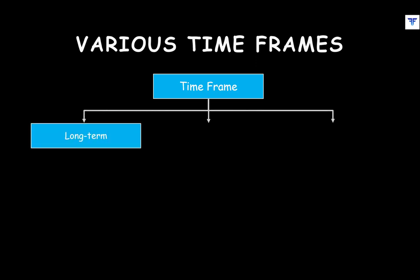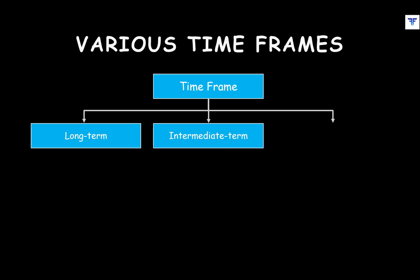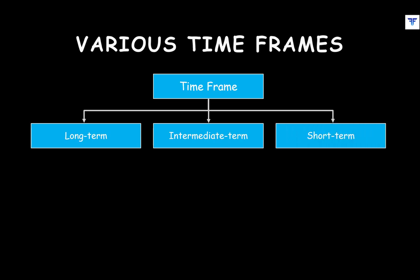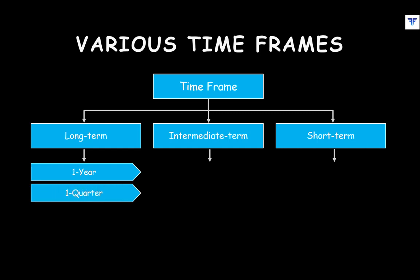A timeframe could broadly be split into three categories: the long-term timeframe, the intermediate-term timeframe, and the short-term timeframe. The long-term timeframe includes the yearly, the quarterly, and the monthly timeframe charts. These timeframes are used to understand and analyze the longer-term price trends of securities.